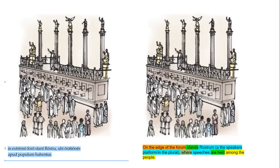'Ubi orationes habentur apud populum' — where speeches — not speakers, speeches — 'habentur,' are held, another passive verb — are held among the people, 'apud populum.' 'Populus' is an interesting word, kind of like our word for 'money' — it is a collective singular. So it's a singular noun, obviously accusative with 'apud,' but it describes a whole group of people.